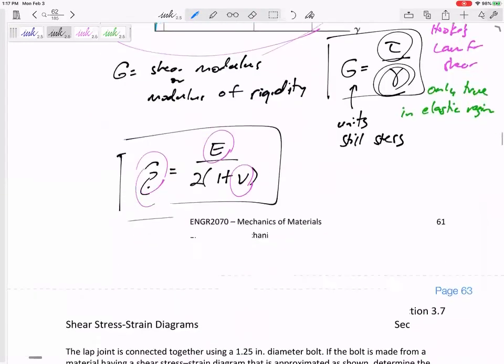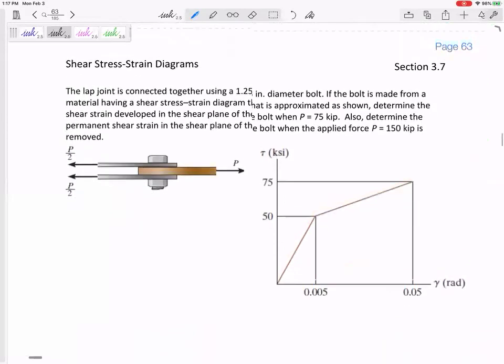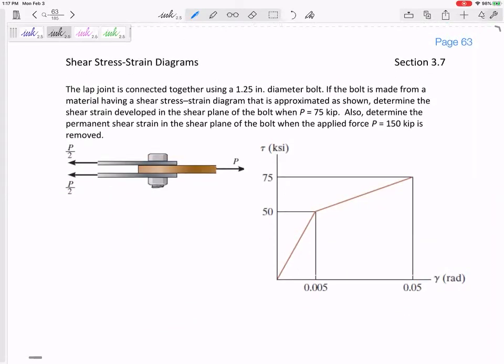Okay, so let's do another shear problem. We've got this lap joint connected together using a 1.25 inch diameter bolt. If the bolt is made from a material having a stress-strain diagram that is approximately shown, determine the shear strain developed in the shear plane of the bolt when P is equal to 75 kips. A kip is a thousand pounds. KSI is kips per square inch, PSI is pounds per square inch - they're off by a factor of a thousand.